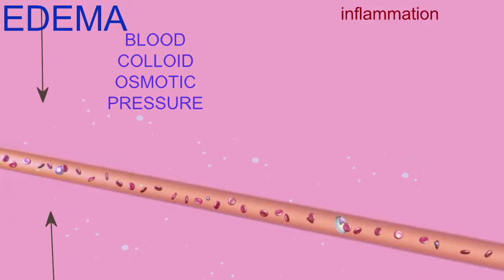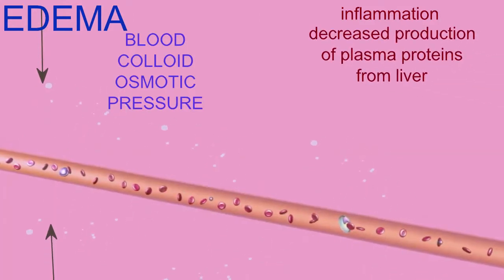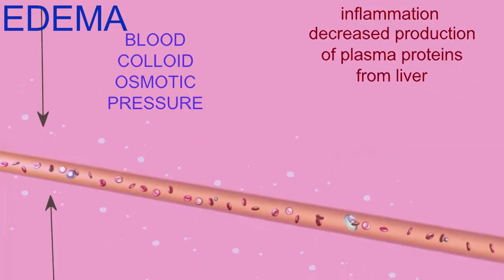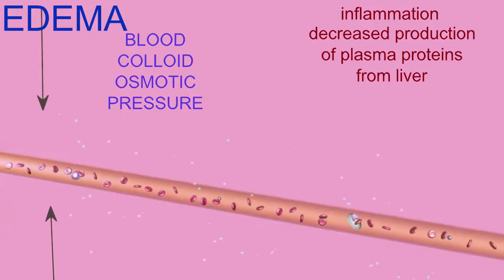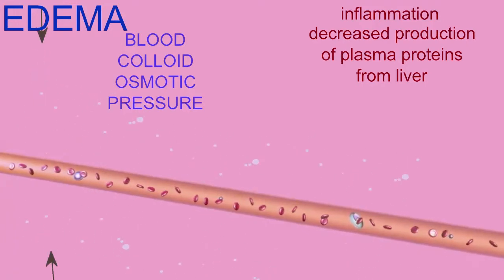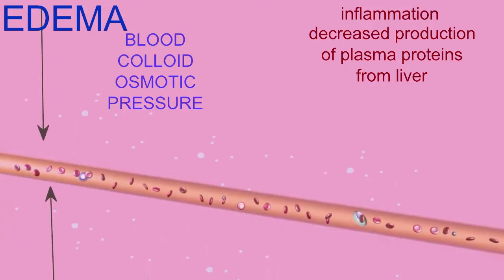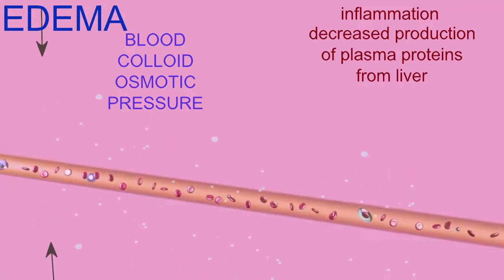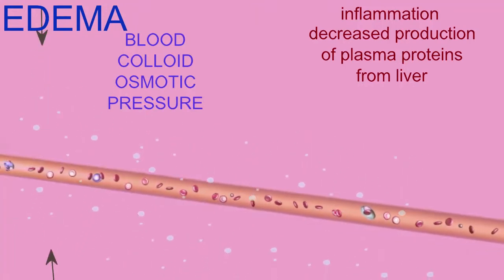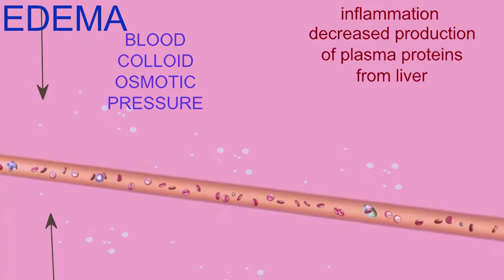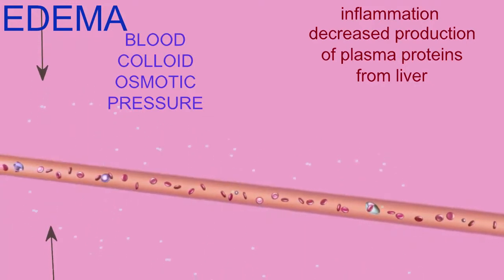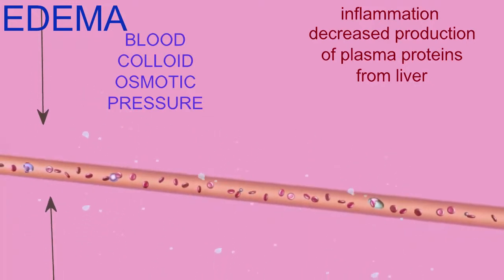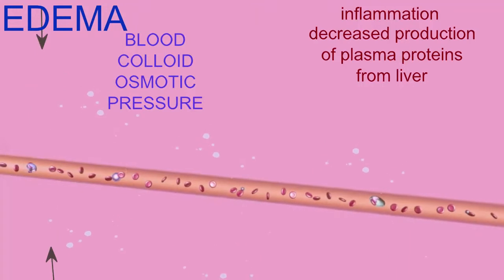Another cause would be a decreased production of blood proteins because of malnutrition, liver disease, or a number of other problems, so that the colloids in the blood are in lower concentration and thus there would be a lower colloid pressure returning fluid to the capillary from the tissue.